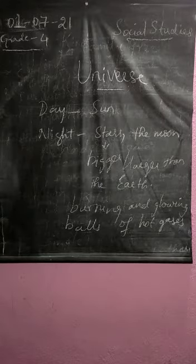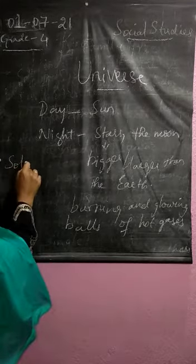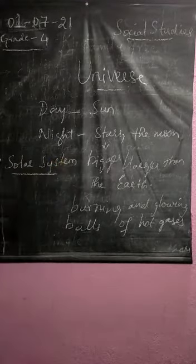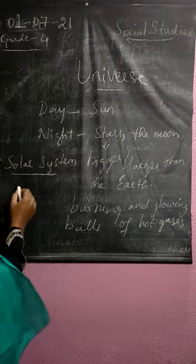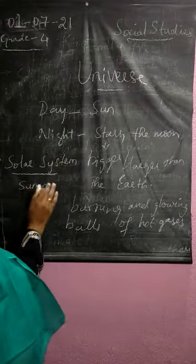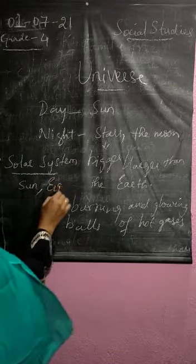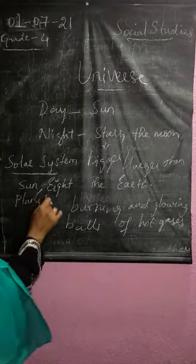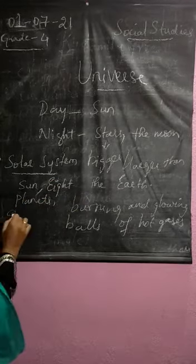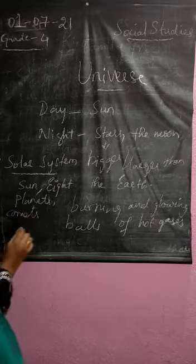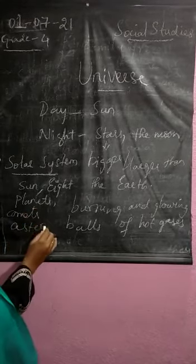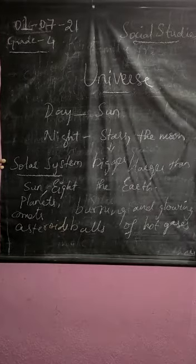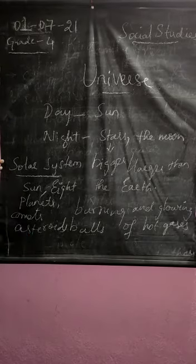Then coming to the solar system. What do you mean by solar system? Solar system consists of sun, eight planets, some other objects like comets, asteroids, and those gases whatever they are found in the space.